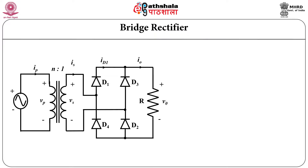Now we will see the third circuit, that is the bridge rectifier. In bridge rectifier, a simple transformer is used, but two more diodes are added compared to center tap configuration. There are four diodes connected in bridge form and the load is connected. Here the output ground is different and the secondary is different. In the first two cases, the secondary terminal is connected to the ground, but that is not the case in this circuit.